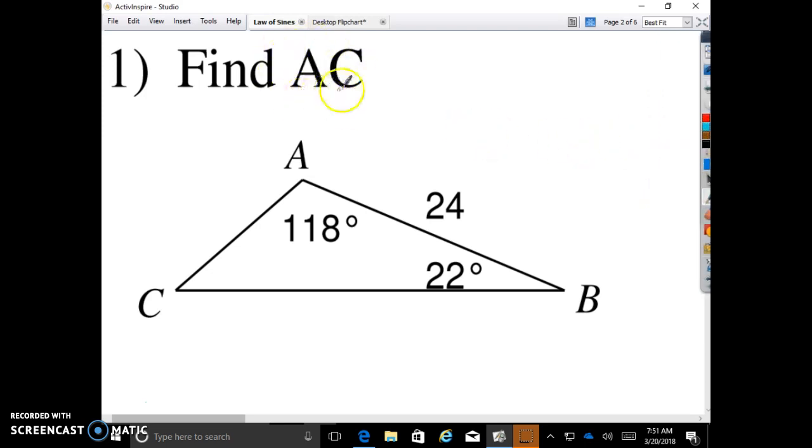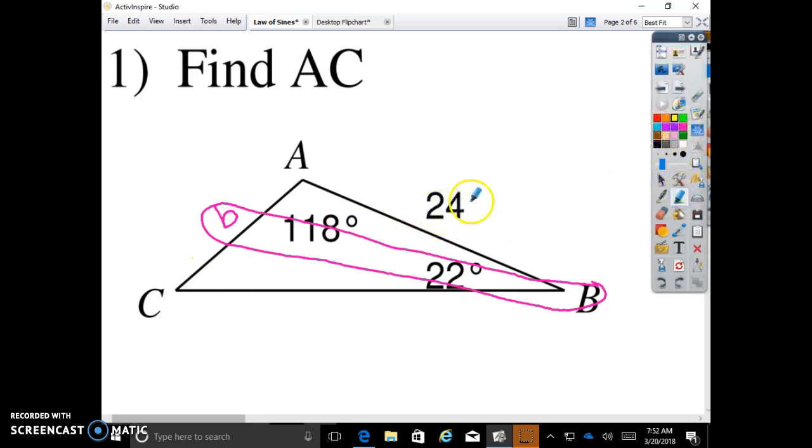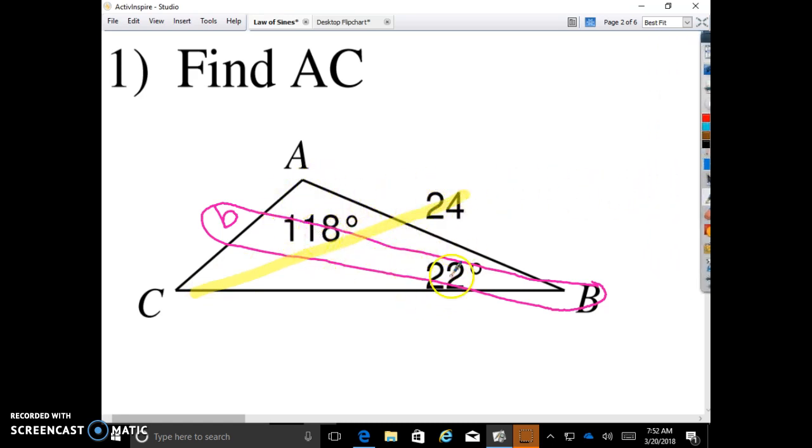So if we are looking to find AC. We're looking for side AC which we're going to call side B because it's opposite of angle B. Did they give us anything that has a pair? The 118 does not have a side length. The 24 does not have an angle, but we can find that angle. 24 goes with what angle? 180 minus 118 minus 22. 118 plus 22 is 140, so 40 more to get to 180. So we know that sine of 40 degrees goes with 24 and sine 22 goes with our unknown B.